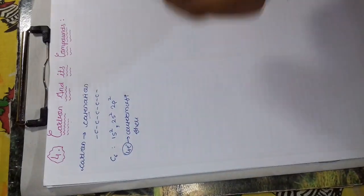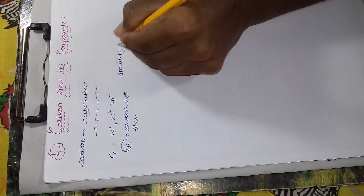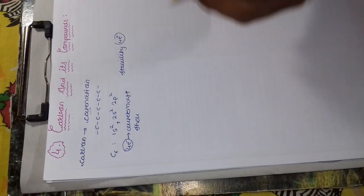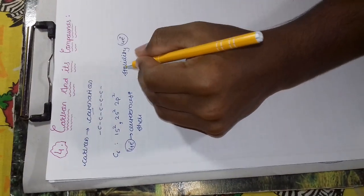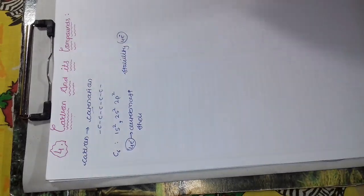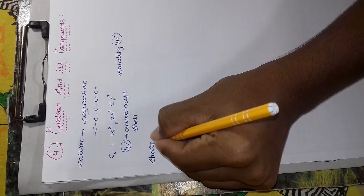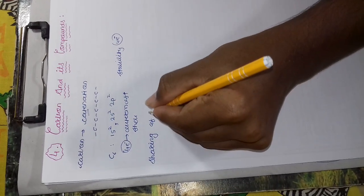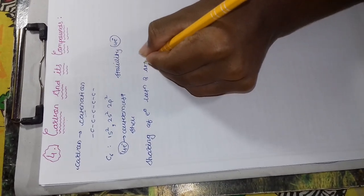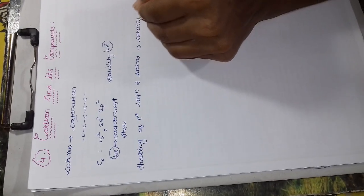To attain stability, it needs four more electrons to achieve the nearest noble gas configuration, that is neon. So, to gain stability or to gain these four electrons, Carbon shows the property of Catenation by sharing of electrons. And this sharing of electrons is known as covalent bond. Sharing of electrons between two atoms is called covalent bond.